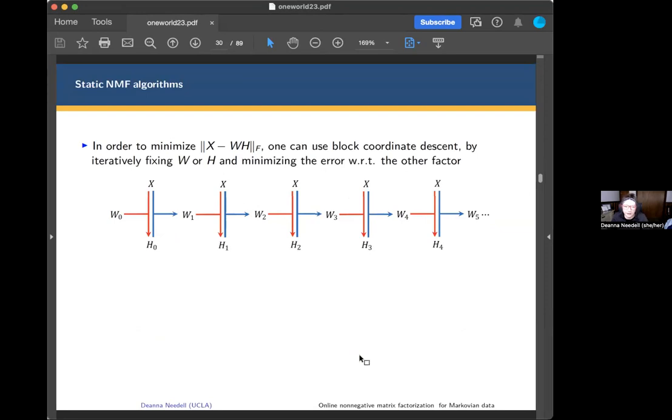A little peek into one of the results to see what the theoretical result looks like. In order to minimize this objective, I'll focus on the simple objective. Although in reality, you use regularizers like an L1 norm to promote sparsity in the topics. But for now, let's say we're just optimizing, minimizing this. The idea is you fix W, you minimize for H, you fix H, minimize for W, and so on.